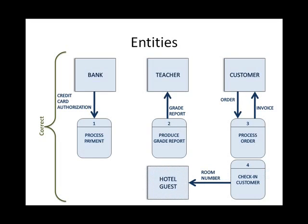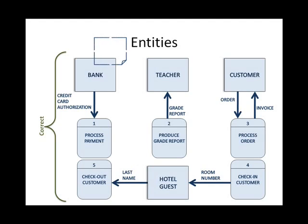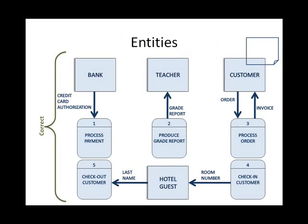Another example: 'check-in customer' provides a room number output to the hotel guest, and the hotel guest provides their last name to the 'checkout customer' process. So the guest can walk in and say their last name to check out or inquire about charges. To summarize: the bank is a source, the teacher entity is a destination, and the customer is both a source and a destination. The entity is sometimes called a terminator because it is either a source, a destination, or both.